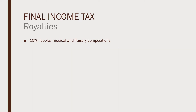The next type of income subject to final income tax is royalties. The general rate is 20%, and 25% for NRA-NETB. However, if the royalties pertain to books, musical, and literary compositions, then it will only be taxed at 10%.